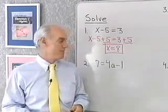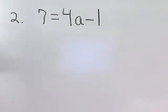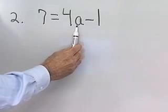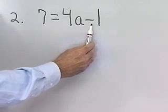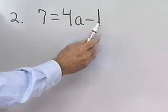Let's look at problem number 2. I have 7 equals 4a minus 1. I want to solve this for a, so I want a to be isolated on one side of the equation. I'll start by getting rid of this negative 1.